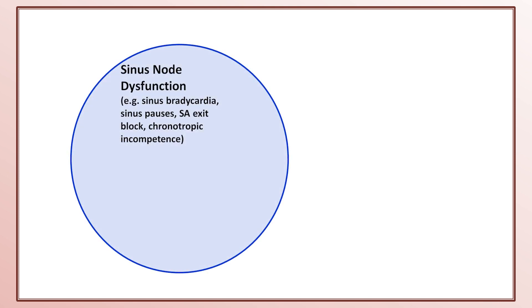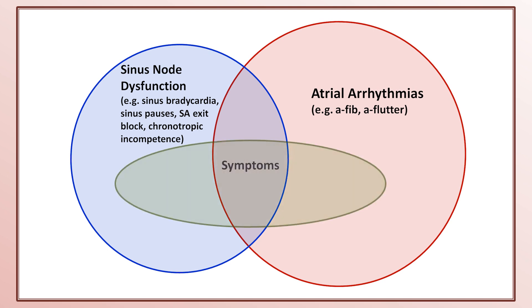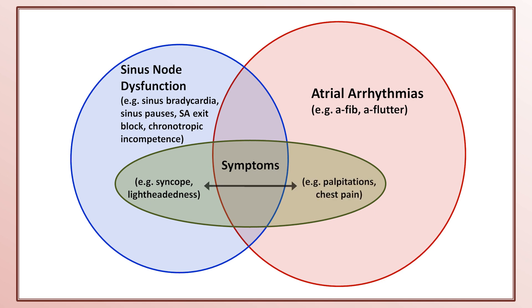I'm going to end this video with a Venn diagram to graphically illustrate the relationship between sinus node dysfunction, sick sinus syndrome, and tachybrady syndrome. The blue circle represents all people with sinus node dysfunction, and the red circle represents all people with atrial arrhythmias — specifically AFib and AFlutter. The green oval represents all patients with arrhythmia-related symptoms, which can be syncope and lightheadedness, palpitations and chest pain, or a mixture of both. Sick sinus syndrome is the turquoise subset — patients with both sinus node dysfunction and symptoms. Tachybrady syndrome is the orange subset — those with sinus node dysfunction, atrial arrhythmias, and symptoms.